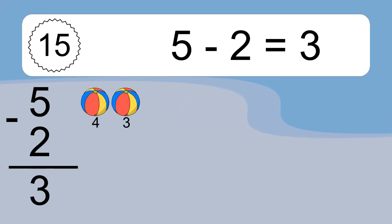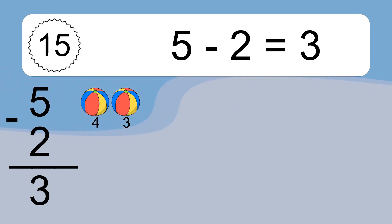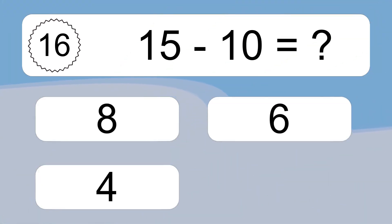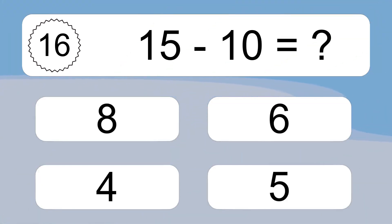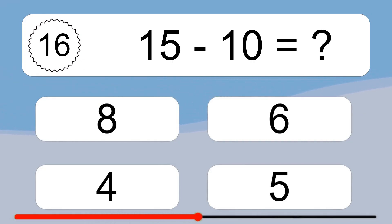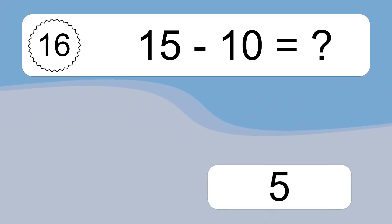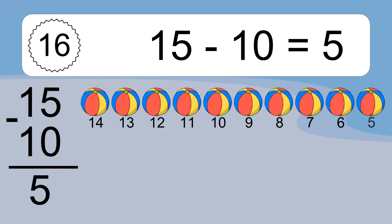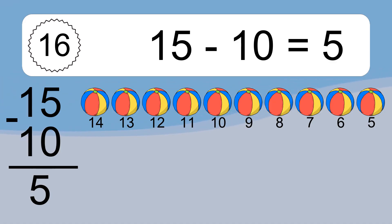5 minus 2 equals what? 5 minus 2 equals 3. Let's count it: 4, 3. 15 minus 10 equals what? 15 minus 10 equals 5. Let's count it: 14, 13, 12, 11, 10, 9, 8, 7, 6, 5.